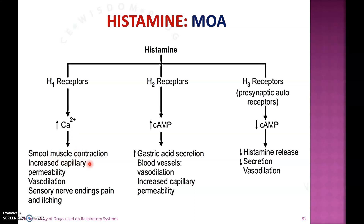Through the H1 receptor, histamine increases calcium ions, which leads to respective actions at the respective site. In smooth muscle it will produce contraction, it increases capillary permeability in blood vessels, produces vasodilation, and causes itching and pain at sensory nerve endings.